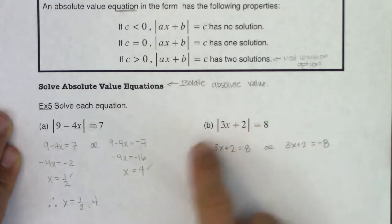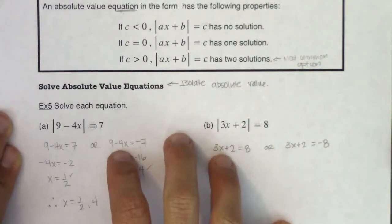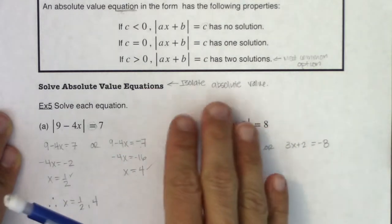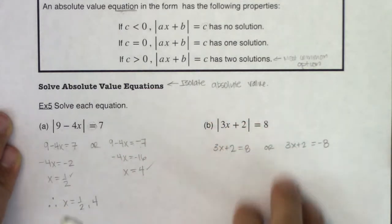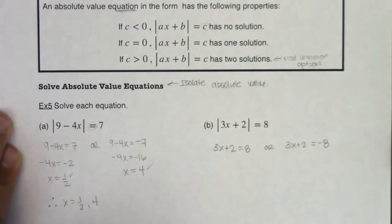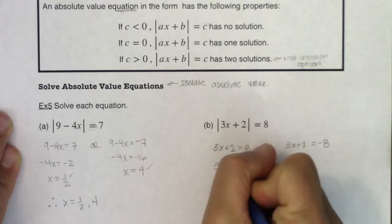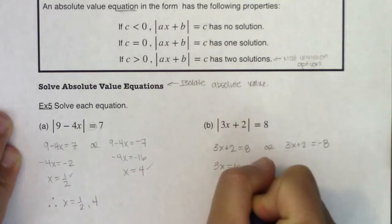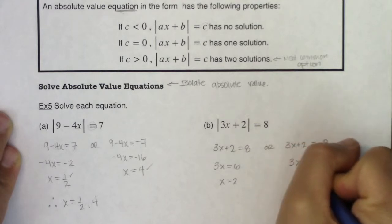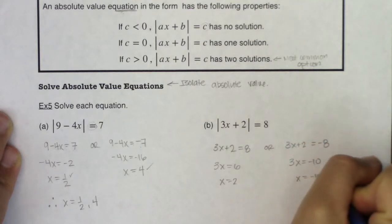Absolute value symbol, equation — here are the mechanics. Compartmentalize this because in section 2.7 you'll pick up two different sets of mechanics for the less-than and greater-than symbols. Solving the first equation: 3x equals 6, so x equals 2. Solving the second: 3x equals negative 10, so x equals negative 10 thirds.